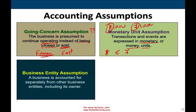Another assumption is the business entity assumption — a business is accounted for separately from other entities, including its owners. The owner and the business are two separate entities. You might have an owner, a business, and many other businesses — each one is independent and accounted for separately. Each business is its own entity for accounting purposes, and we don't include the owner's personal finances in it.